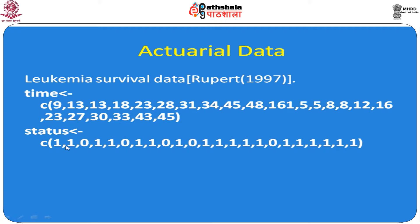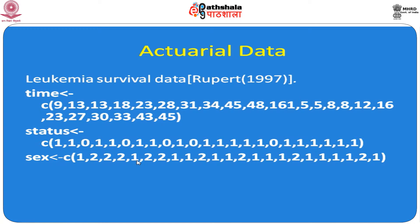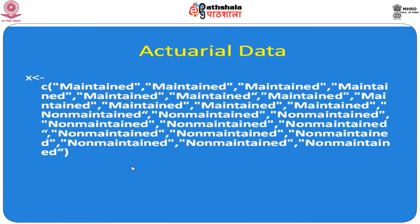The first patient at 9 months died; the second patient at 13 months died; the third patient at 13 months was censored — that is a censored observation. The fourth patient is not censored; the sixth patient has a censored observation. The third variable is sex, represented as 1 for male and 2 for female. Another variable X represents maintained and not maintained therapy.